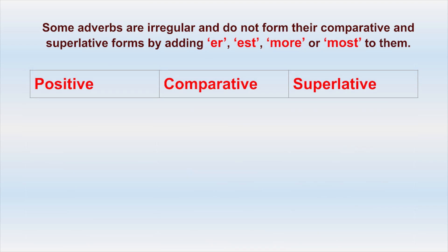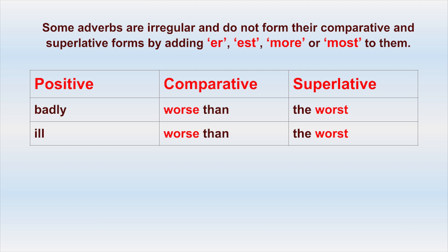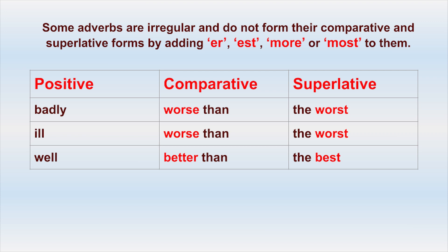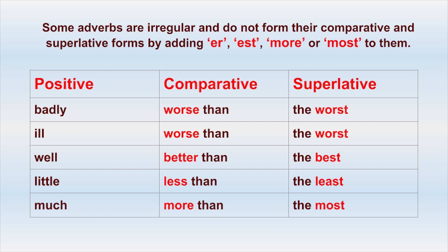There are some adverbs that are irregular and do not form their comparative and superlative forms by adding -ER, -EST, 'more,' or 'most.' Here is a list of some of those adverbs: badly — worse than — the worst. Ill — worse than — the worst. Well — better than — the best. Little — less than — the least. Much — more than — the most. Far — farther than — the farthest.